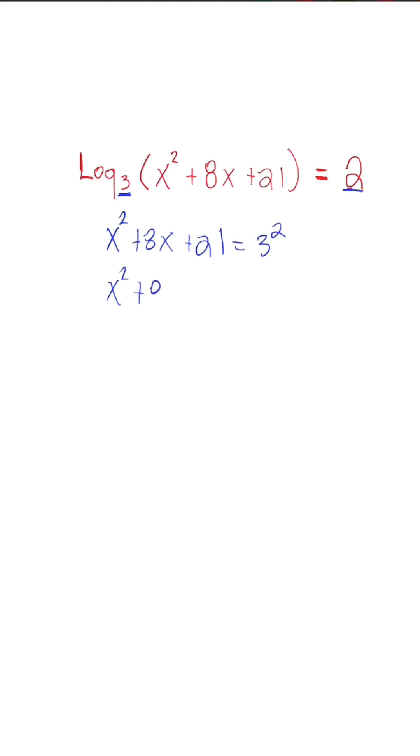So at this step now, once we simplify further, we can now solve this like a regular quadratic equation, meaning we're going to set it equal to 0 by subtracting 9. So we have x squared plus 8x.